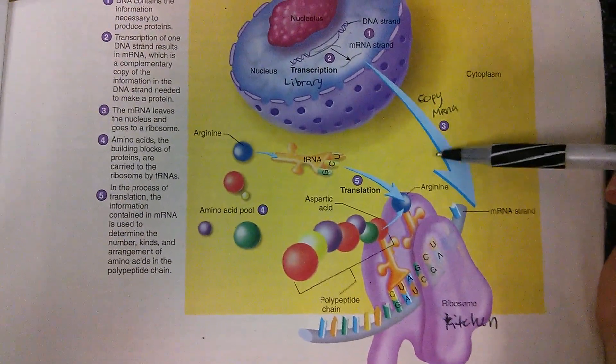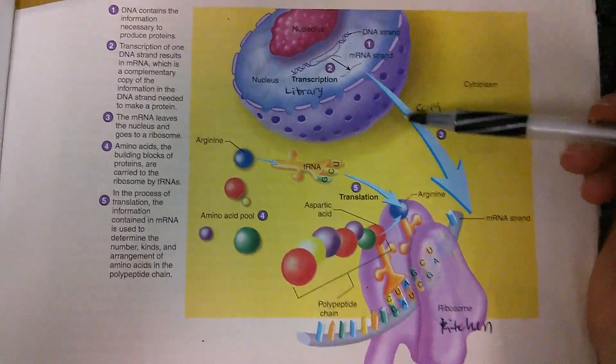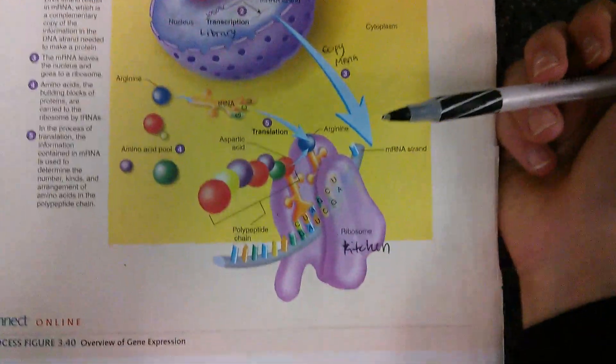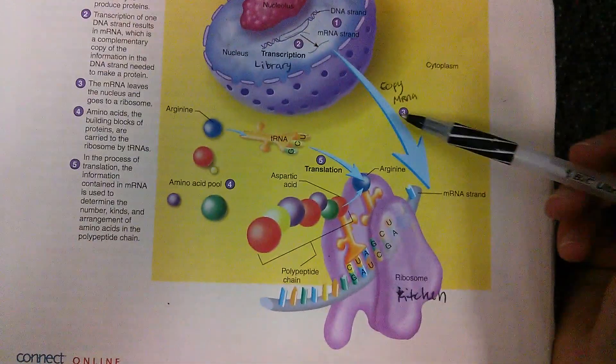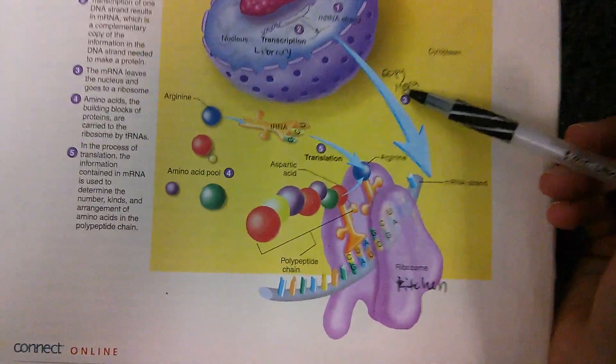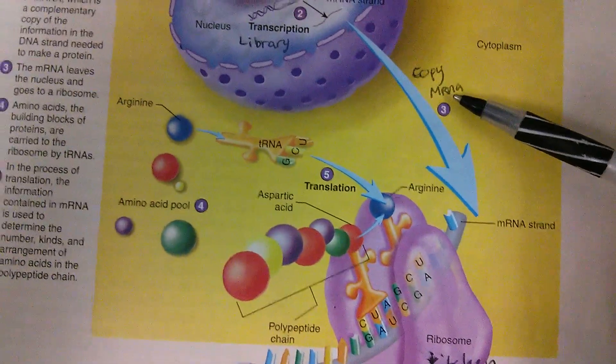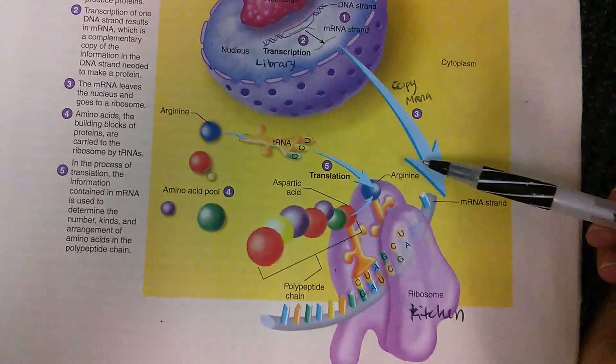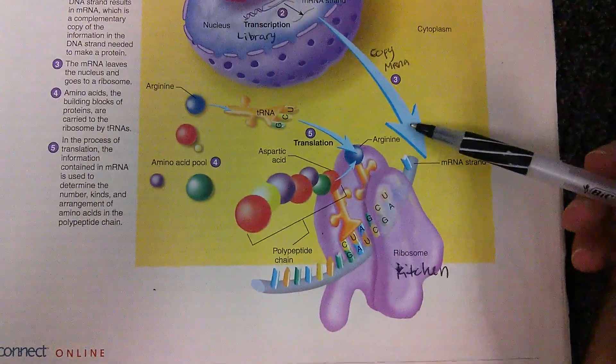So this is the copy leaving the library, leaving the nucleus to go back to the person's house in the kitchen where they're going to be baking the cake. Now the copy here is also called the mRNA, which stands for messenger RNA, because you're sending that message or the recipe for what you need to be building.